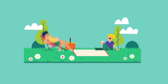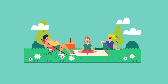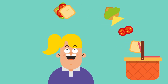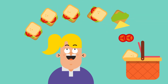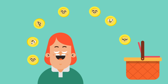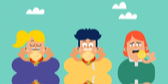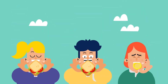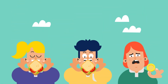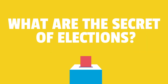Last week, Lucy, Tom and Mary organised a picnic in the park. Lucy brought five sandwiches, Tom brought three, and Mary just brought eight pieces of gold. And they are about to learn a lesson – what are the secrets of elections?